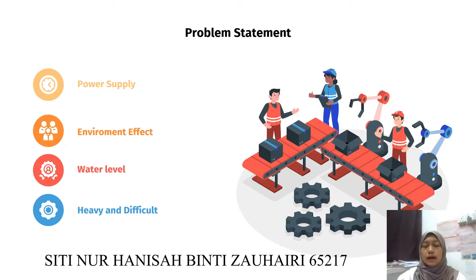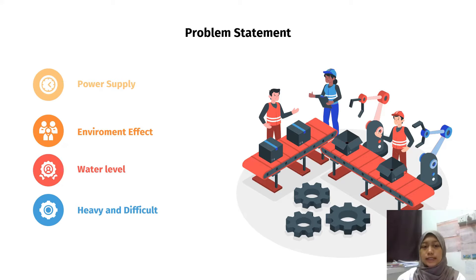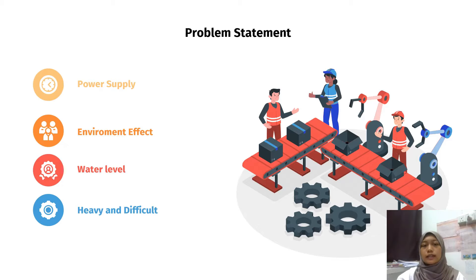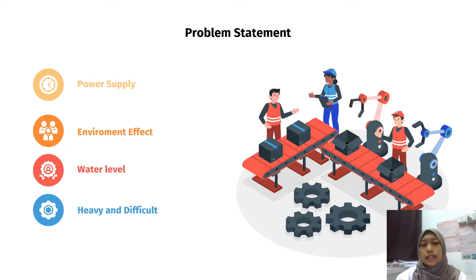Our first problem segment is that the power supply is far away from the jetty, which is at the processing center. The second is the environmental effect, which includes wind effect, corrosion, and so on. The third issue is water level — the boat and the jetty have different water levels, making it heavy and difficult to manage the load and unload process from the boat to the jetty and the processing center.